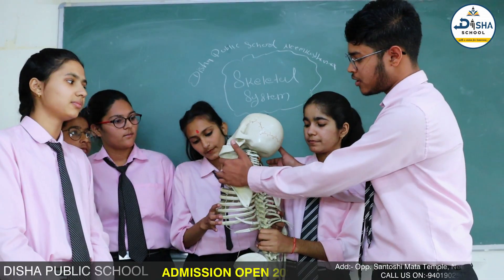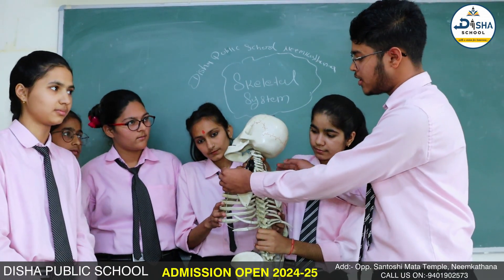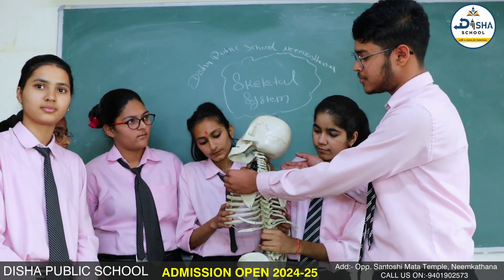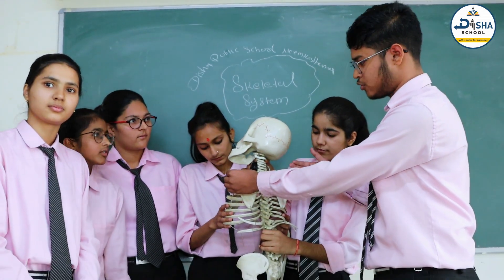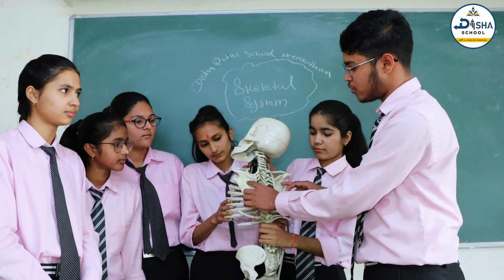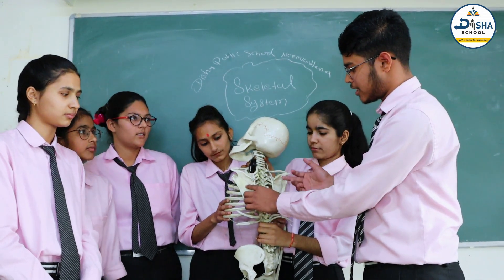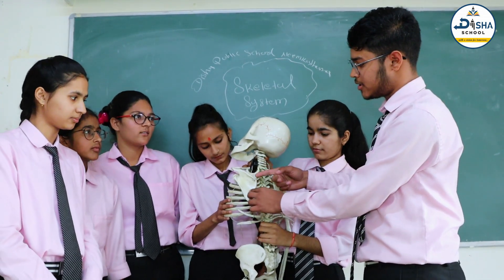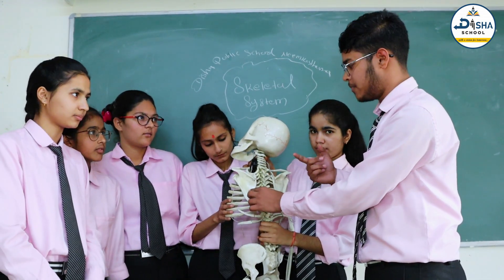These 2 bones are known as collar bones and these help the body to support it. And these 2 bones are known as scapula and these are in triangle shape.